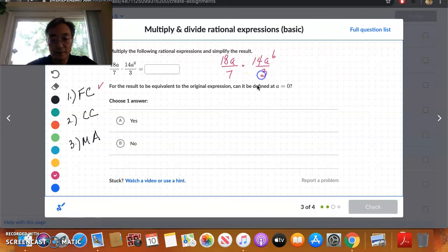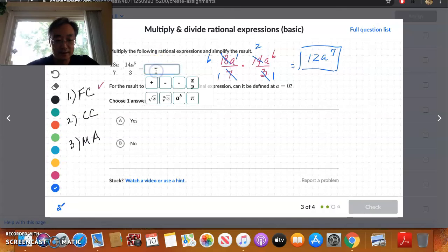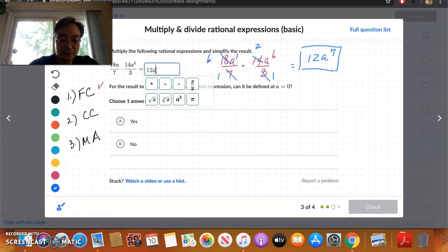So let's cross cancel here. 14a to the 6th over 3. So it looks like, well, these are not going to cancel. Neither are these. But across, yes. So 3 goes into 18 six times, right? And 7 goes into 14 twice, right? And then a times a to the 6th, you just add the exponents. There's 1 here. So it's just going to be 7. So 6 times 2 is 12a to the 7th. And there's nothing in the denominator. It's 1 times 1. So there it is.